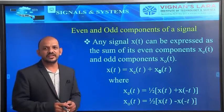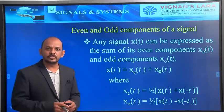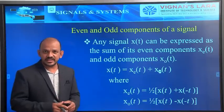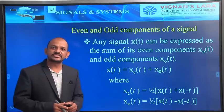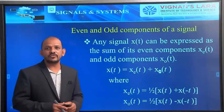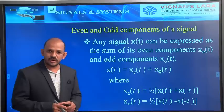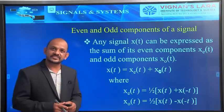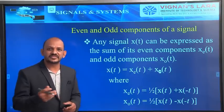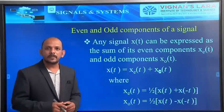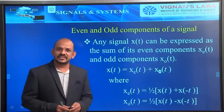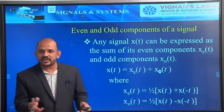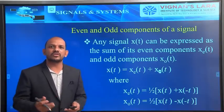In the same way, if a signal is said to be an odd signal, it has to satisfy the condition x(t) equal to minus x(-t). These are the two conditions. If the signal satisfies the respective conditions, then they will be the respective even and odd signals.